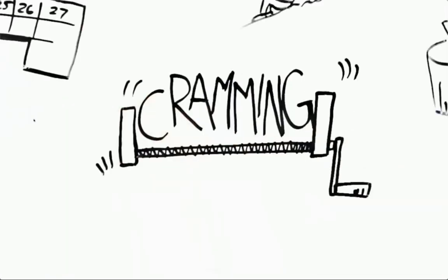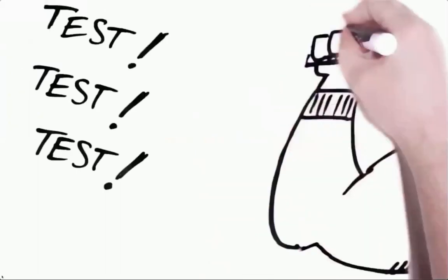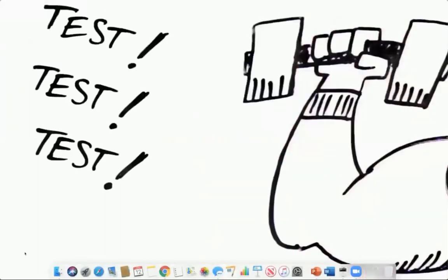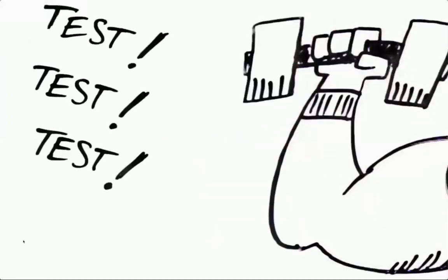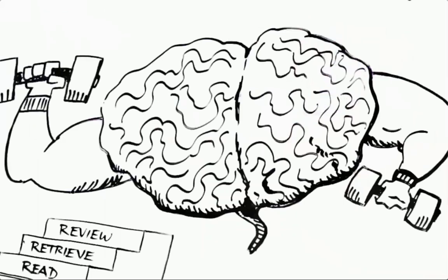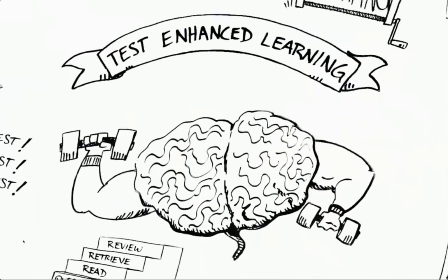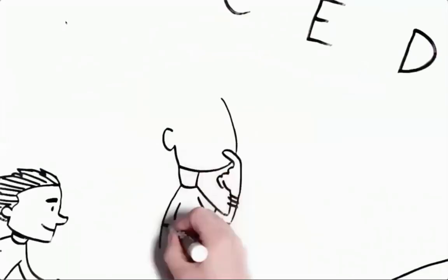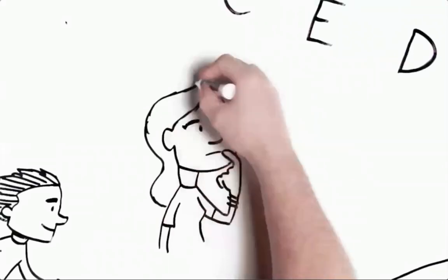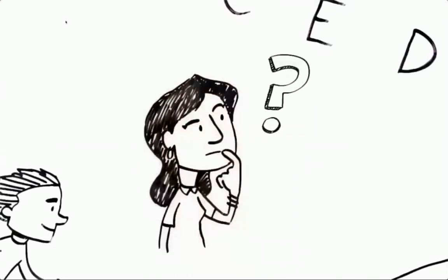Some people learn and remember more easily than others, just as some people are naturally faster or stronger. But for all of us, muscles grow stronger with exercise, and so do our mental muscles. Test-enhanced learning is one way you can strengthen your memory muscles.